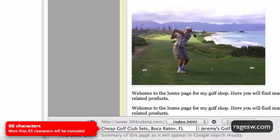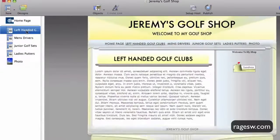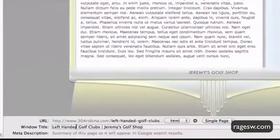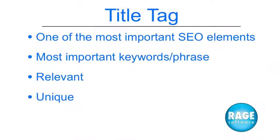Ideally, you should create a unique title for every page on your website. What's really great about sandbox is that if you were to leave the title tag box blank, an auto-generated title tag will be created using a combination of your page name and your site name. The title tag is one of the most important SEO elements. Put your most important keywords near the beginning of your title. Keywords and phrases should be relevant to the actual page. Each page should have a unique title.